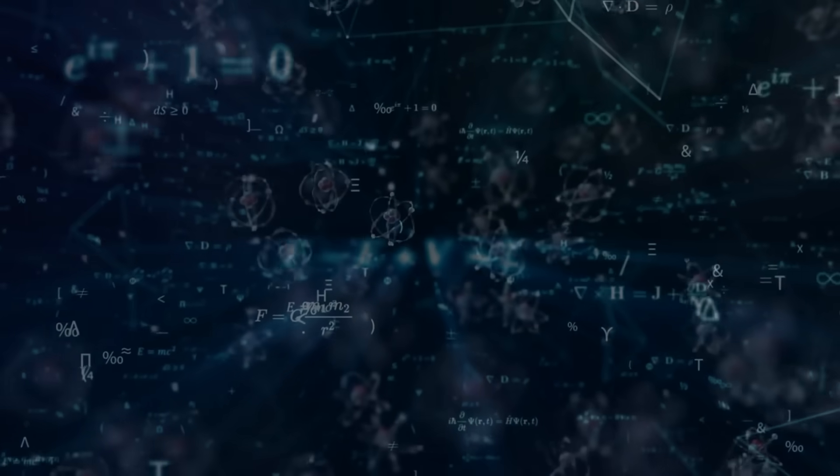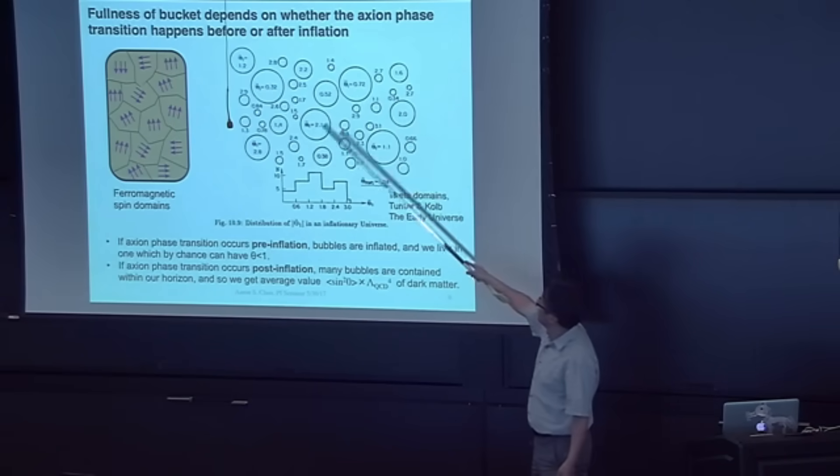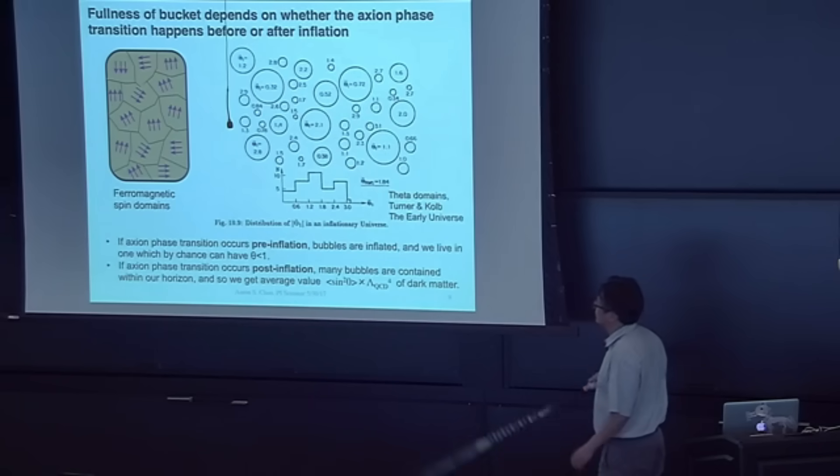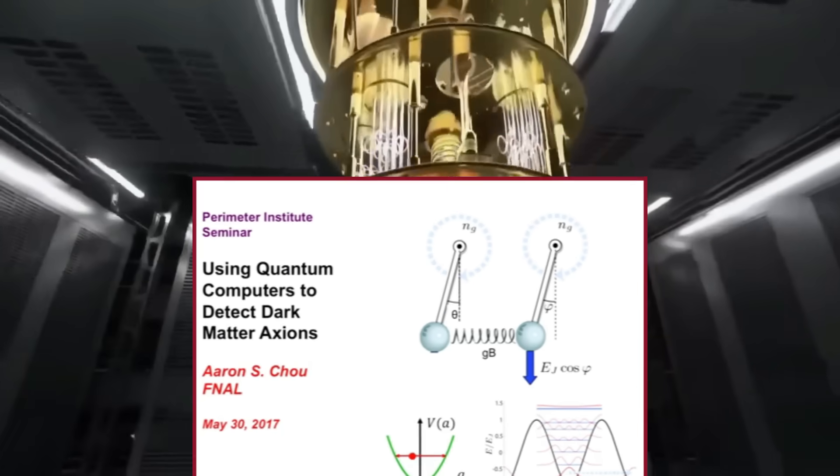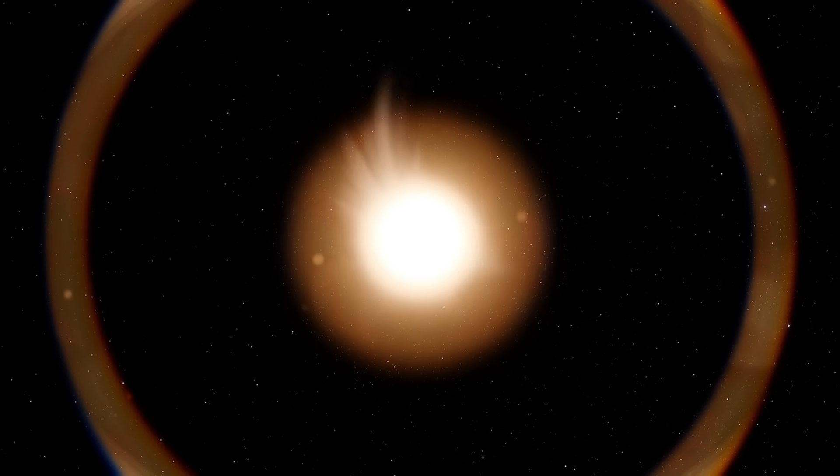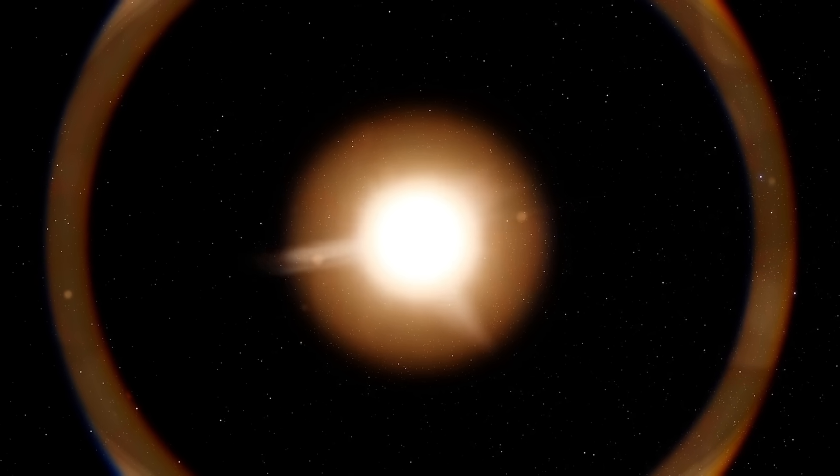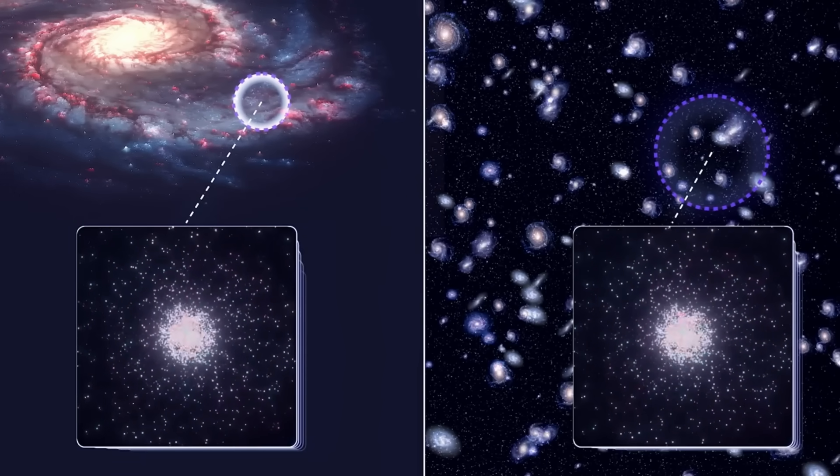In the race to build the most powerful quantum computer, Microsoft made a bold claim, one that could have profound implications for axion research. The company announced that it had successfully harnessed Majorana fermions, a strange class of particles that could revolutionize quantum computing. But here's where things get interesting.